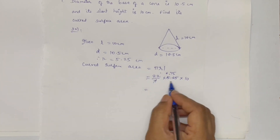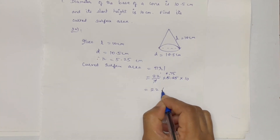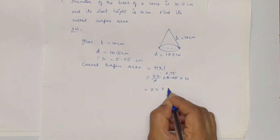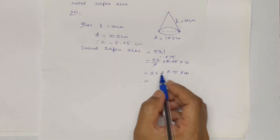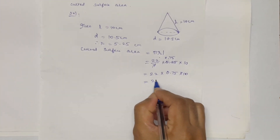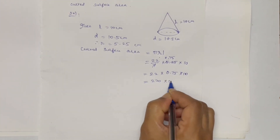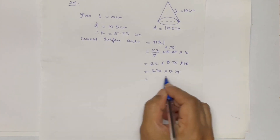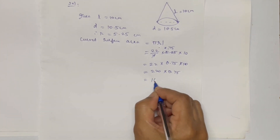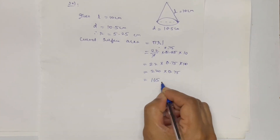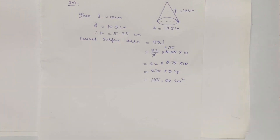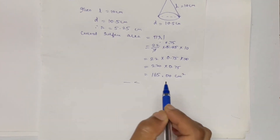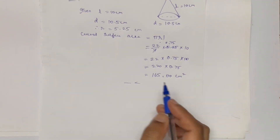0.75 into 10 is equal to 220 into 0.75, which equals 165. So the curved surface area is 165 cm².